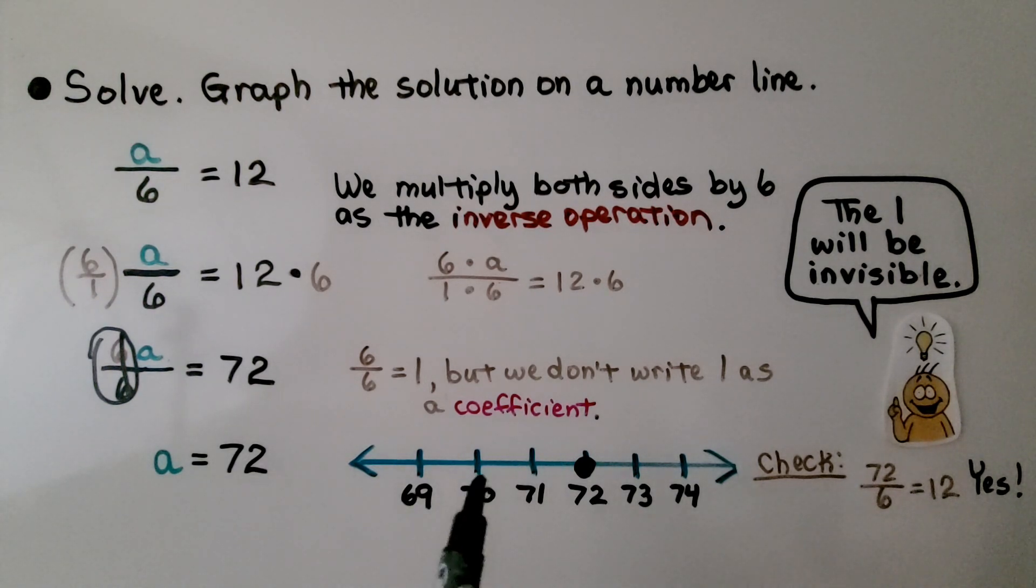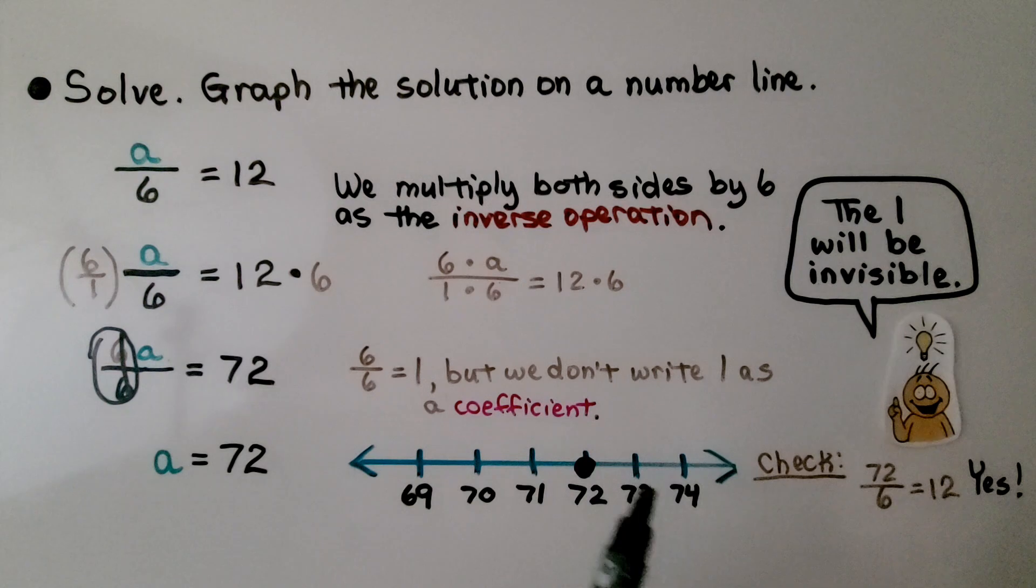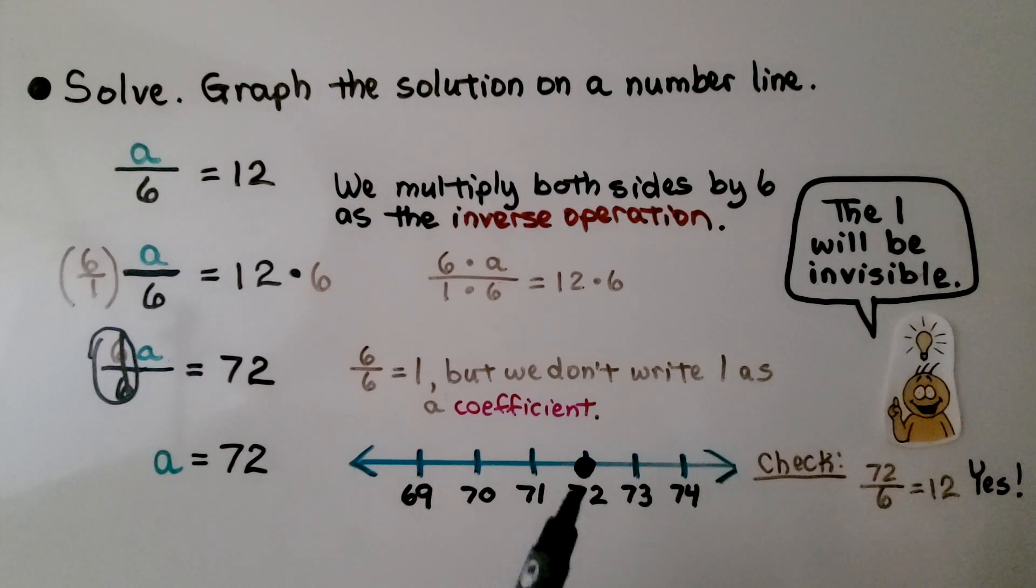And we can graph it on a number line. We make sure there's a couple of marks after it or before it so it's not on the edge of the number line. And we plot it as 72. And we can check our answer. We can substitute 72 for a. 72 divided by 6 is equal to 12. So yes, we know we did it correctly.